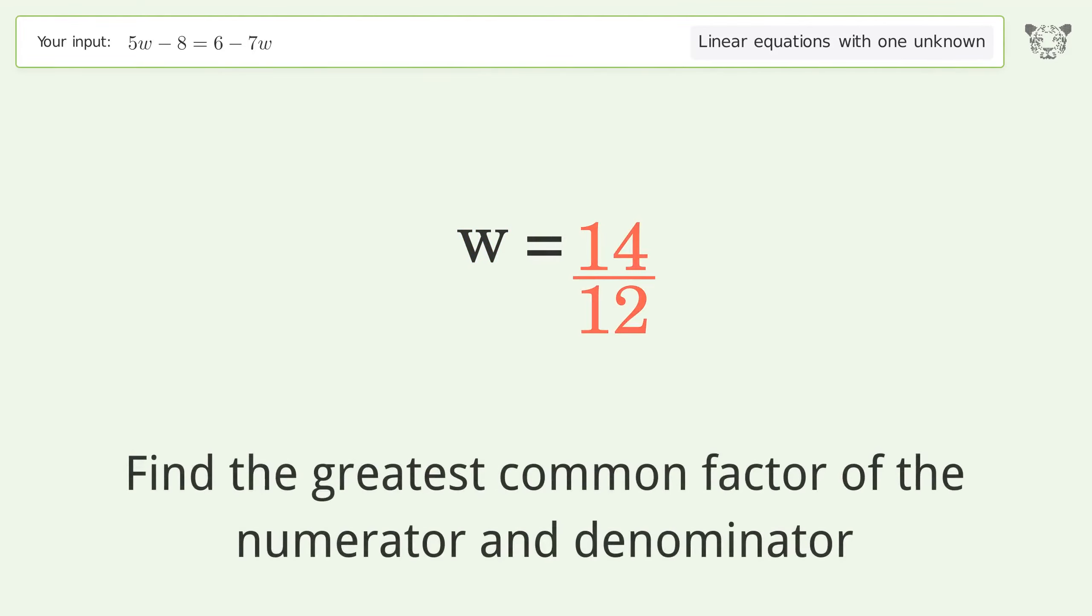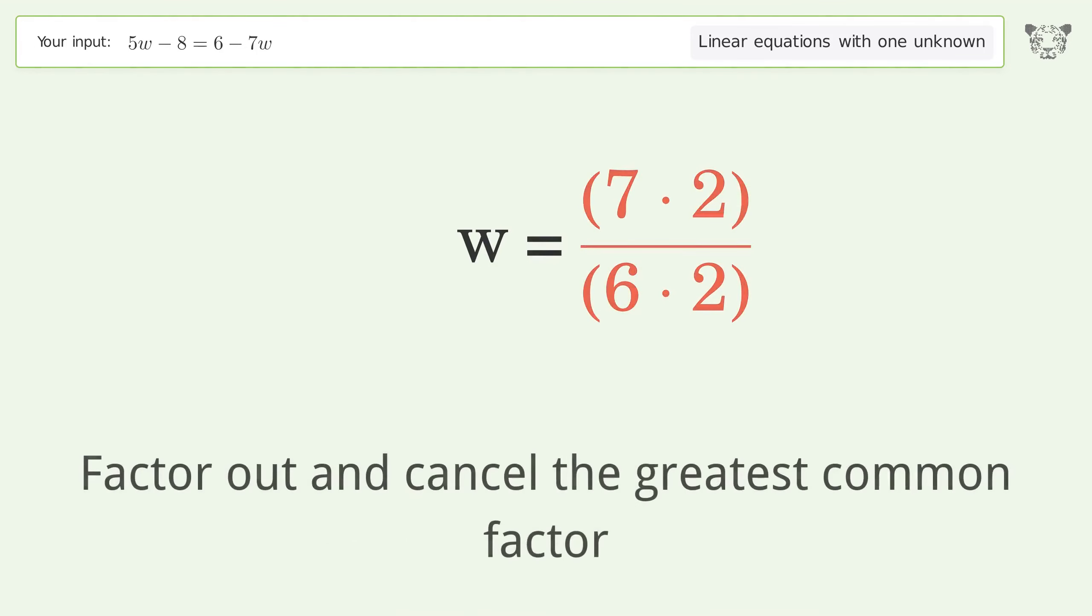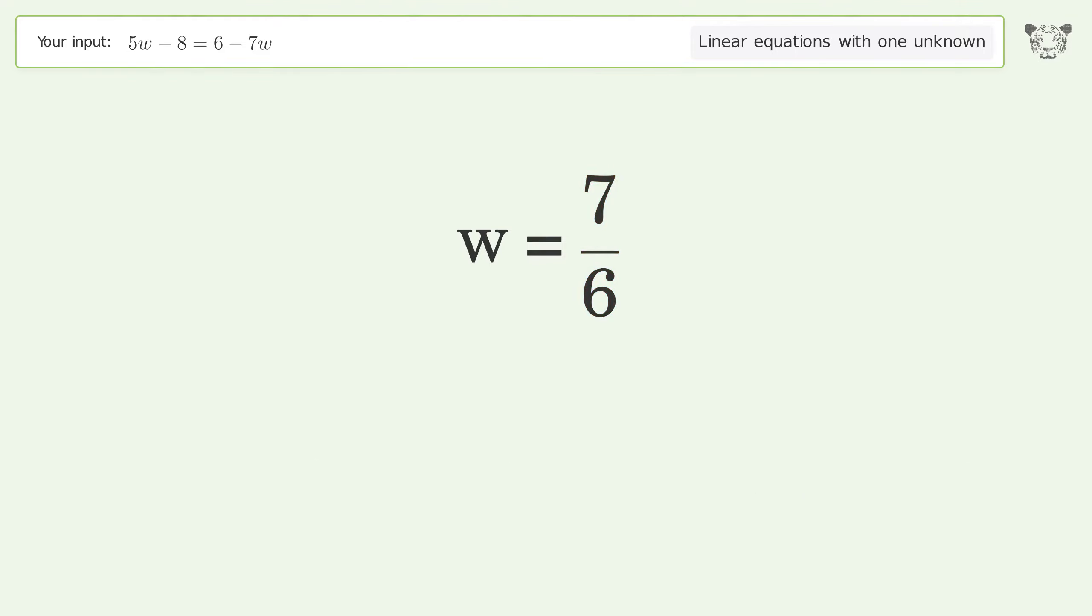Find the greatest common factor of the numerator and denominator. Factor out and cancel the greatest common factor. And so the final result is w equals 7 over 6.